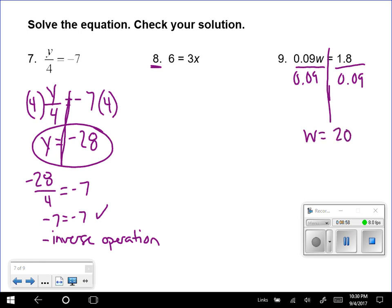But w is going to equal 20. If you use a calculator you would see that. And we could always plug this back in. 0.09 times 20 should be 1.8. And when we punch that in, or when we do all the math, that is correct.